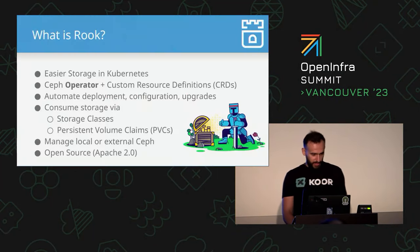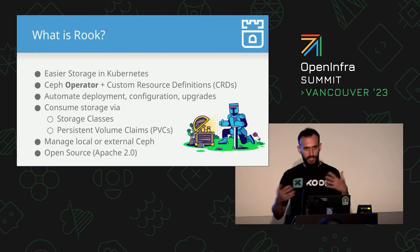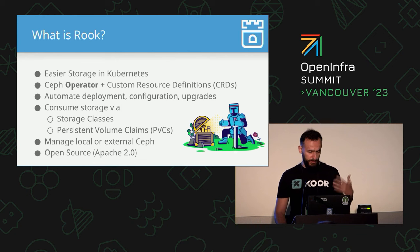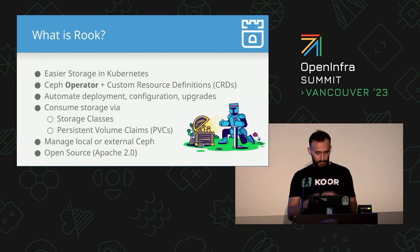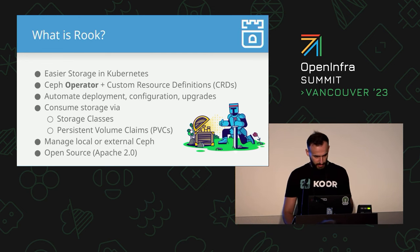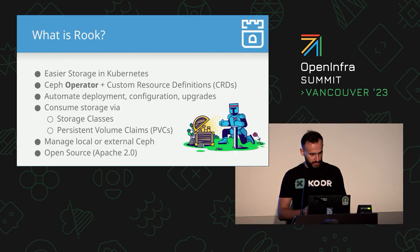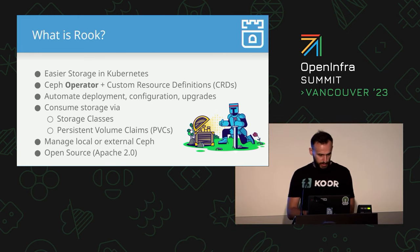Rook is an option for easier storage in Kubernetes — it's basically a Ceph operator. We'll come back to what operator means shortly. It also contains custom resource definitions, and when you create your custom resources, you can basically manage and automate the deployment, configuration, and upgrades of your Ceph cluster. From a user standpoint, you consume storage via the CSI — available via storage classes and persistent volume claims. Rook allows you to manage local or external Ceph, on the same Kubernetes cluster or an external one. Rook lives on your own cluster and can still manage everything. And of course, it's open source, based on the Apache 2 license.